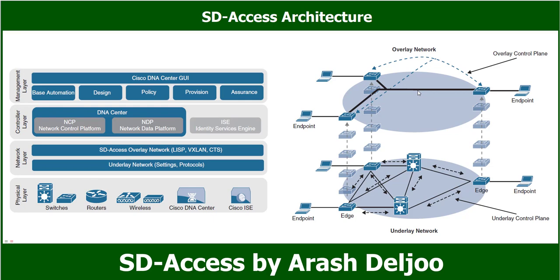The SD Access fabric — the overlay network — provides policy-based network segmentation, host mobility for wired and wireless hosts, and enhanced security beyond normal switching and routing capabilities. In SD Access, the fabric overlay is fully automated regardless of the underlying network model used — manual or automated. It includes all the necessary overlay control plane protocols, addressing, and global configuration associated with the SD Access fabric operation.